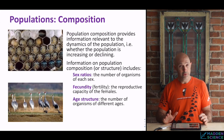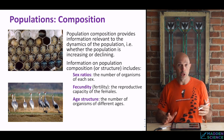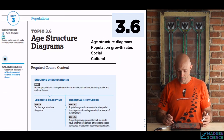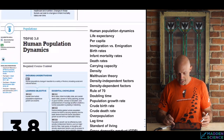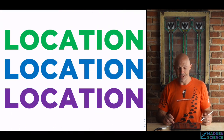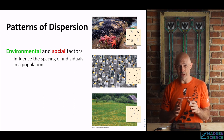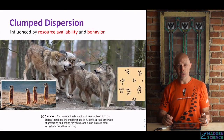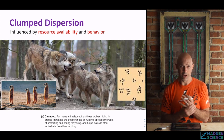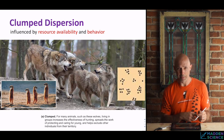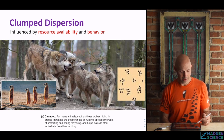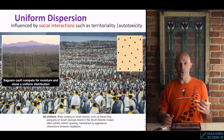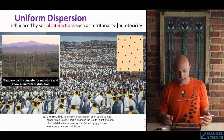Moving on — some things like sex ratio, fecundity, and age structure will be covered when we get to the human sections (3.6 through 3.9) in class. In this video we're talking about location, specifically patterns of dispersion. These are contingent on environmental and social factors. Clumped dispersion may be based on social behavior and resource availability — for example, a wolf pack working together for hunting, or meerkats staying clumped to avoid predators.